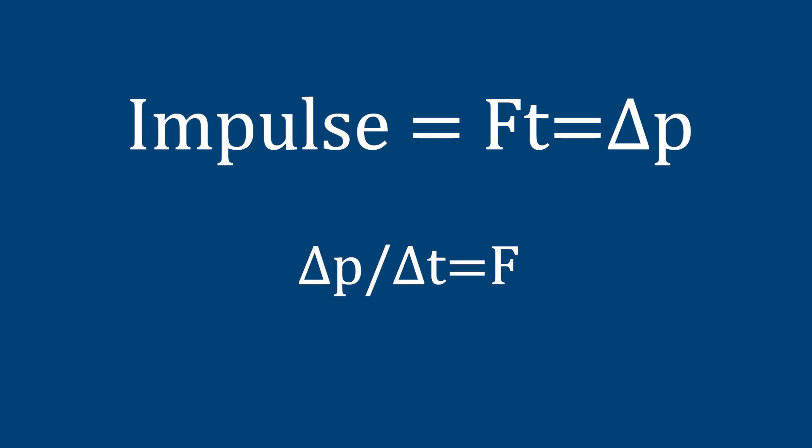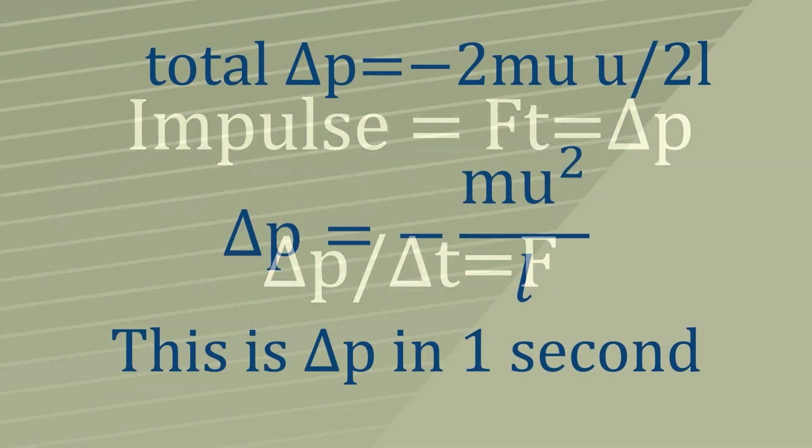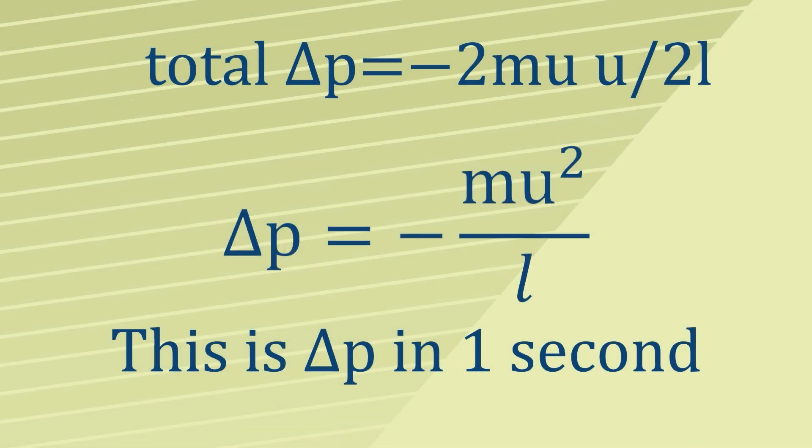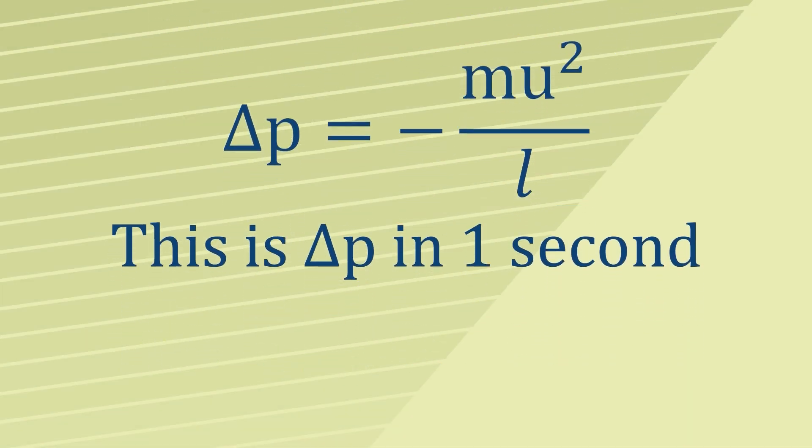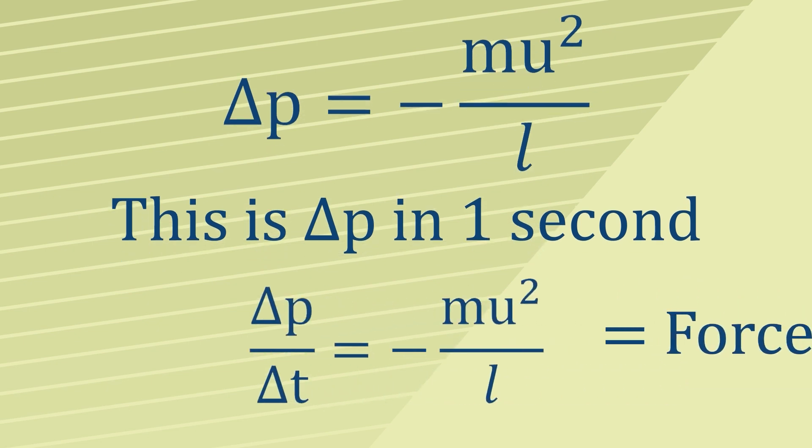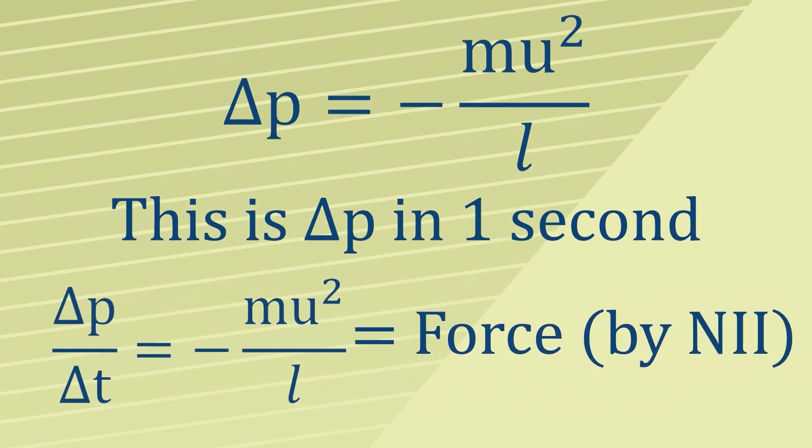Undoubtedly you can recall that impulse is equal to force times time, which equals change in momentum. Therefore, we can say change in momentum over change of time is equal to the force. And since ΔT equals 1, we can further say that our formula for ΔP, minus mu² over L, is equal to the force.